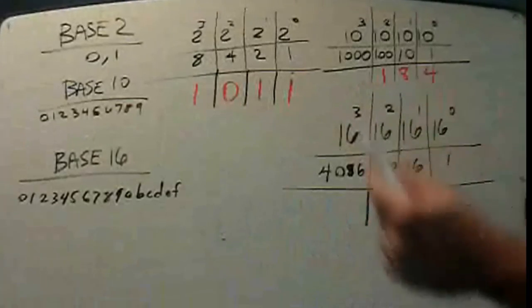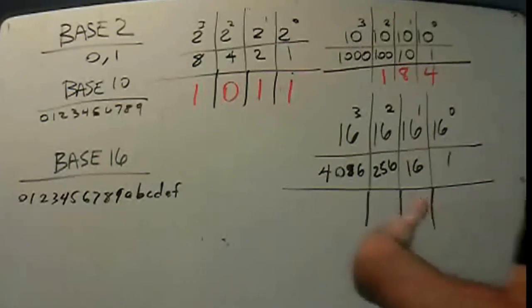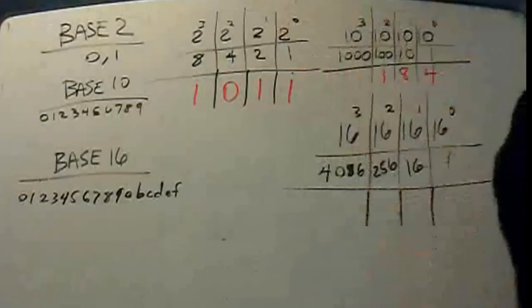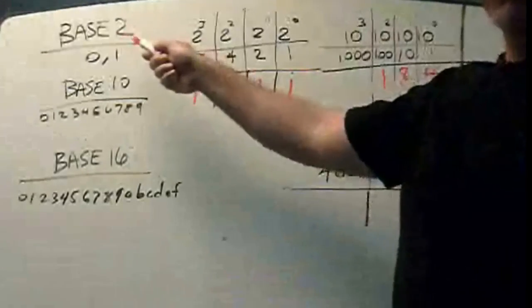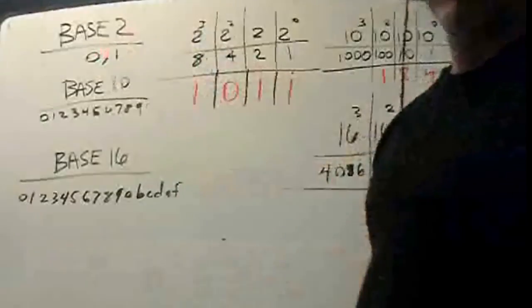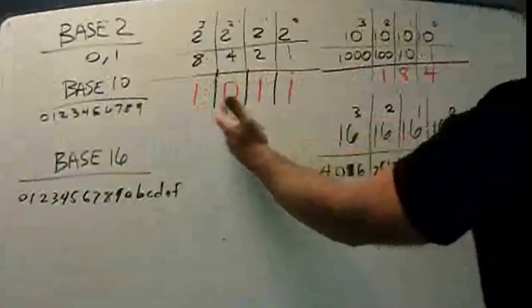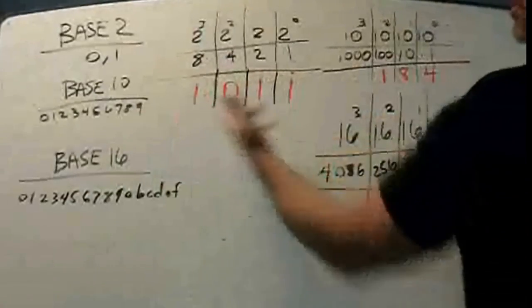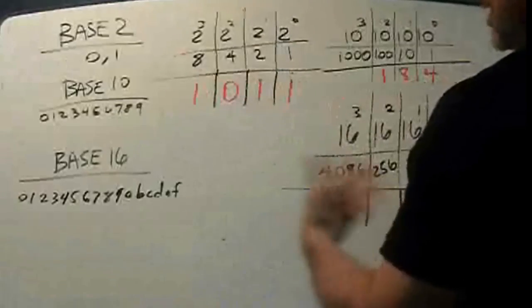And that brings up another important distinction between decimal versus binary, and that is the fact that in a base 2 system, you only have two characters or two numbers, 0 or 1. So I only put 0 or 1's in the place values here to have my number.